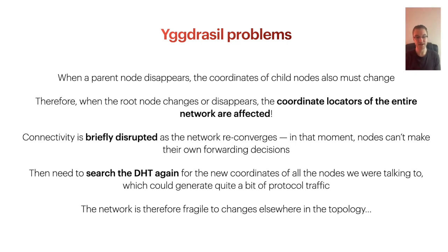We did successfully produce demos using Yggdrasil as a transport for Matrix federation traffic, but there are some problems with it. The biggest is that all the network locators being relative to parent nodes makes the network fragile when topology changes, and that can happen for a variety of reasons. It's possible that parts of the network will need to re-number with new sets of coordinates if one of the parent nodes or the network root node disappears. When this happens, traffic across the network is disrupted, and during that short period when the network is trying to reconverge, nodes can no longer depend on their local routing knowledge to forward traffic properly. Then when the network does eventually reconverge, we have to start searching the DHT again for new coordinates, which can result in quite a lot of protocol traffic, especially on a big network.